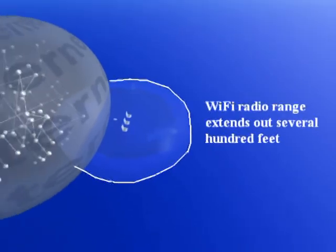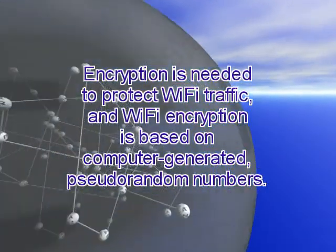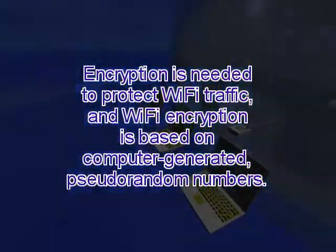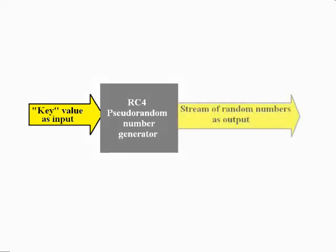Computers can do a very good job with generating random numbers, and that's what this RC4 algorithm does. It is an extremely good pseudo-random number generator. You give it a key — that's the encryption key that WEP uses — and using that key, it scrambles its initial condition in a pattern based on the key. From that point on, it generates very good random numbers.